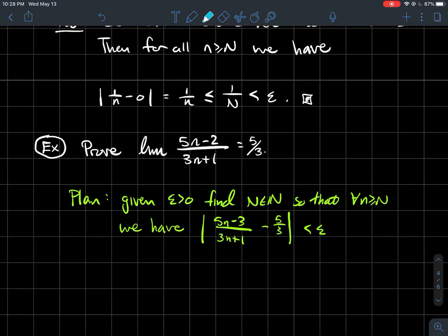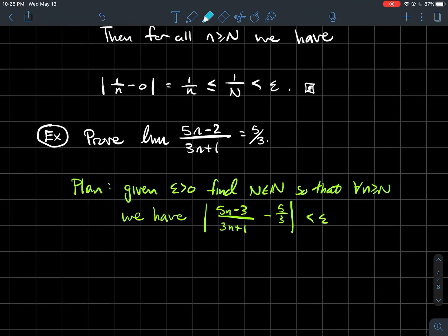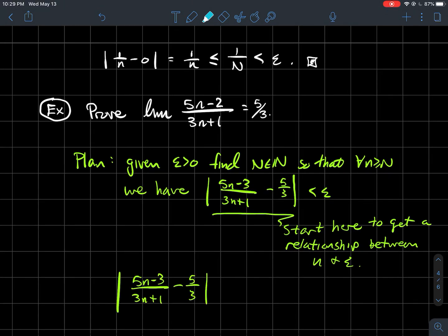...we have |(5n-2)/(3n+1) - 5/3| < epsilon. A point in my sequence minus the supposed limit should be less than epsilon eventually. How do I find the indices n where that happens? Start there and try to get a relationship between n and epsilon.